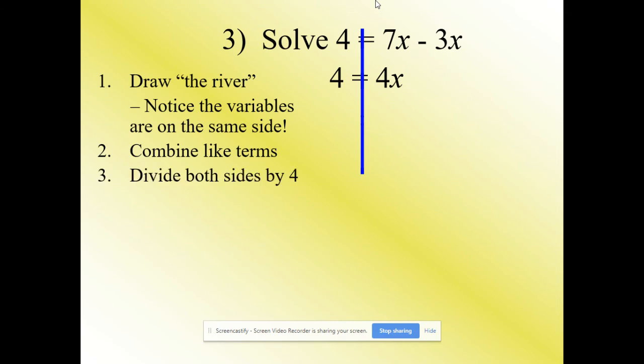So divide by 4 because that variable's been times by 4. Divide by 4 and x is equal to 1. And you can do it backwards like that, doesn't matter, still get it right.